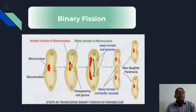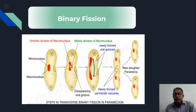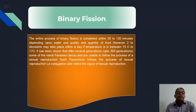Observing the binary fission diagram, we see elongation of the micronucleus, elongation of the meganucleus, two contractile vacuoles budded off at the anterior side and one at the posterior side, and a constriction furrow marked at the midpoint of the body. Newly formed contractile vacuoles are visible, and two daughter Paramecia are formed — the anterior one is the proter and the posterior one is the opisthe. The entire process of binary fission is completed within 30 to 120 minutes depending upon water quality and quantity of food.